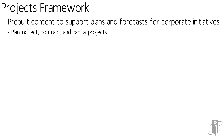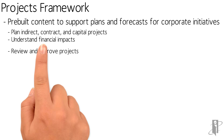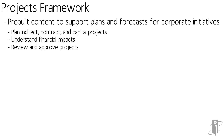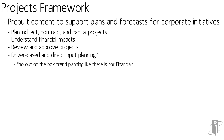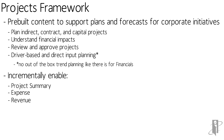It could be a contract project, maybe something we're doing for someone outside our organization. It could be a capitalized project where we're making an asset we're going to depreciate, or maybe an indirect project, something entirely coming out of operating expenses. It helps us understand the financial impact of those projects. There could be a review and approval process to decide which projects we're going to do. We might be directly inputting dollar amounts, or it could be driver-based. There is no out-of-the-box trend planning like there is for the Financials Framework. And we can turn on other things like project summaries, detailed expense planning, revenue planning, analysis.